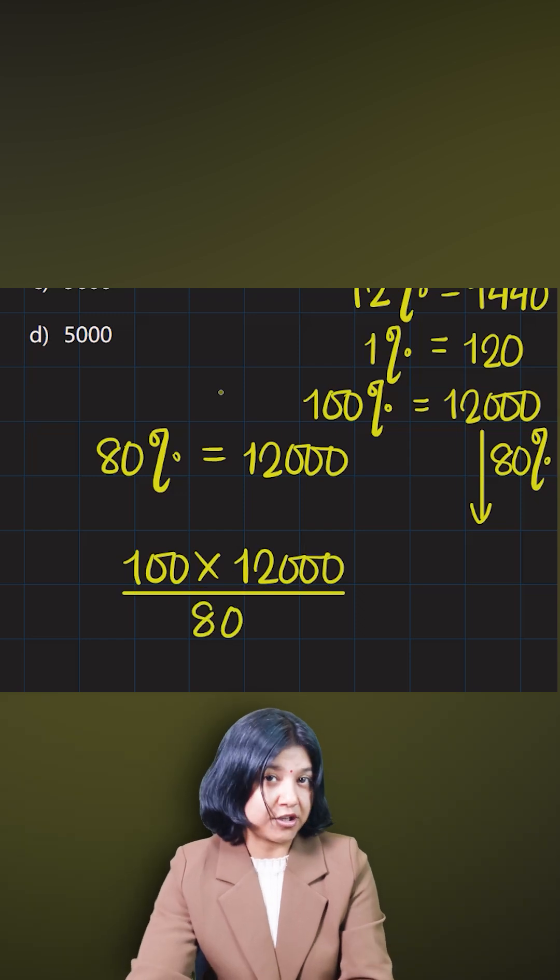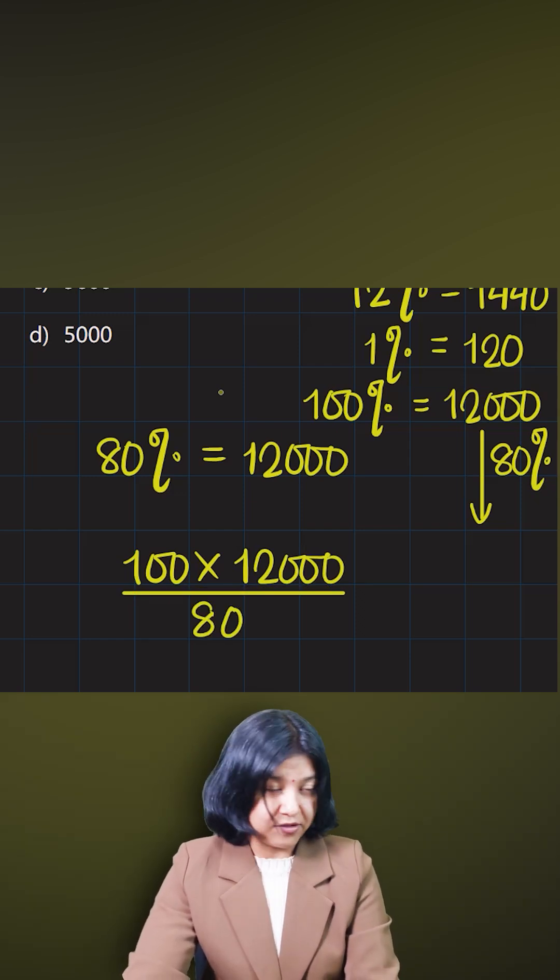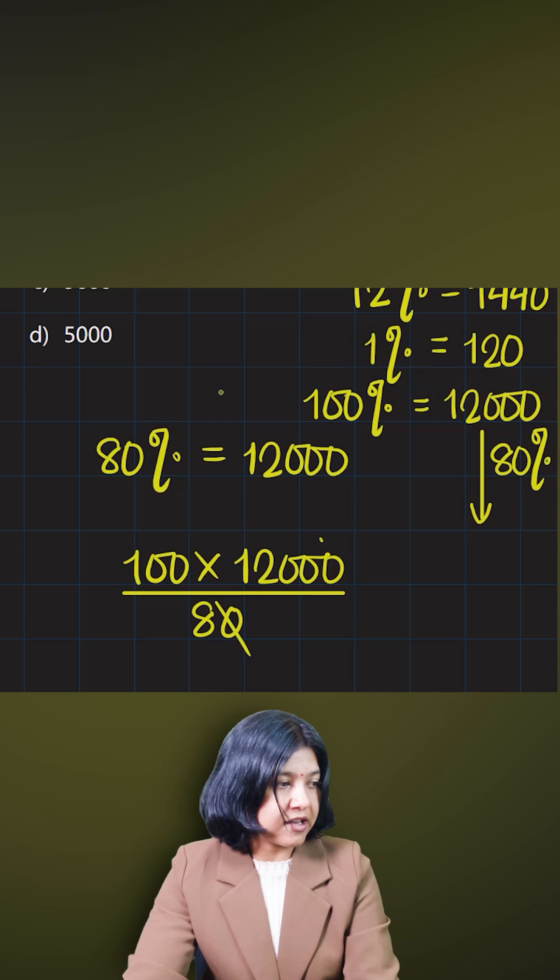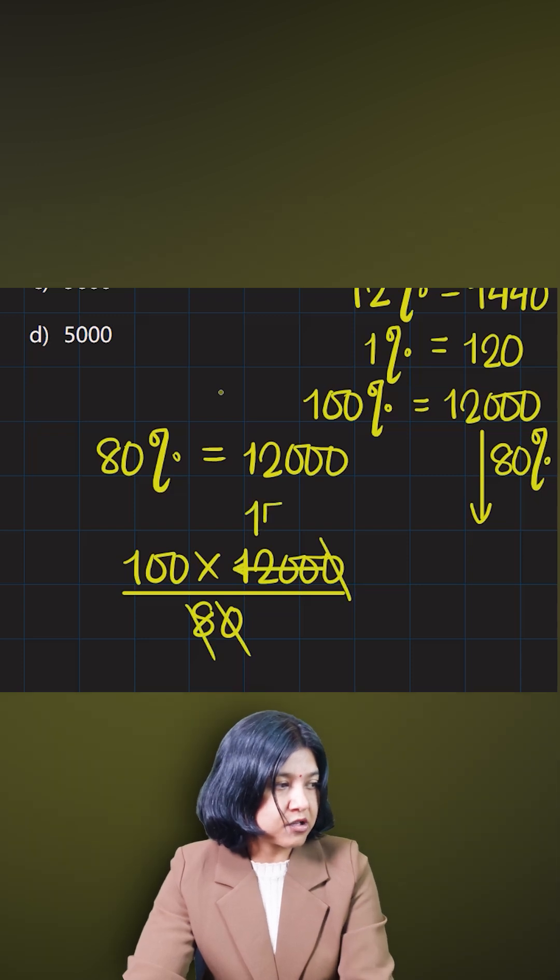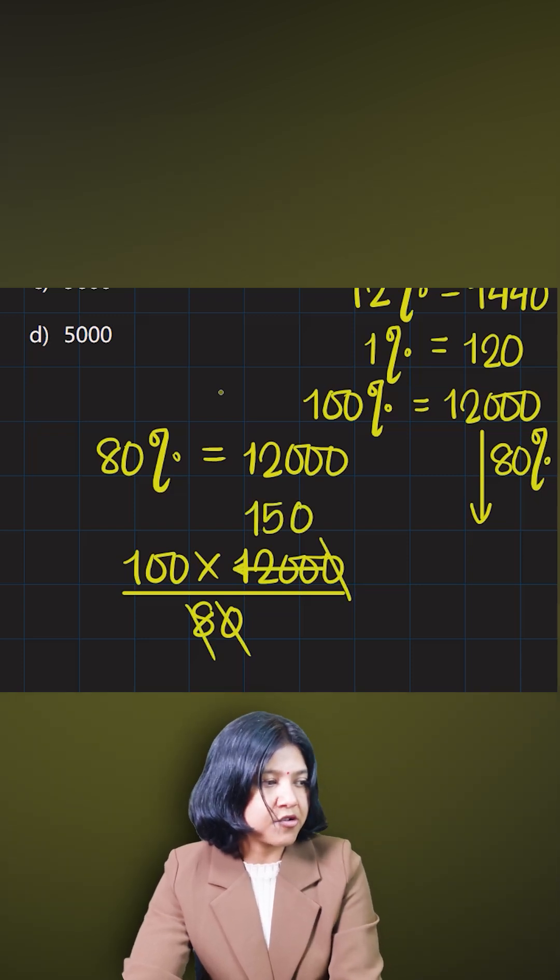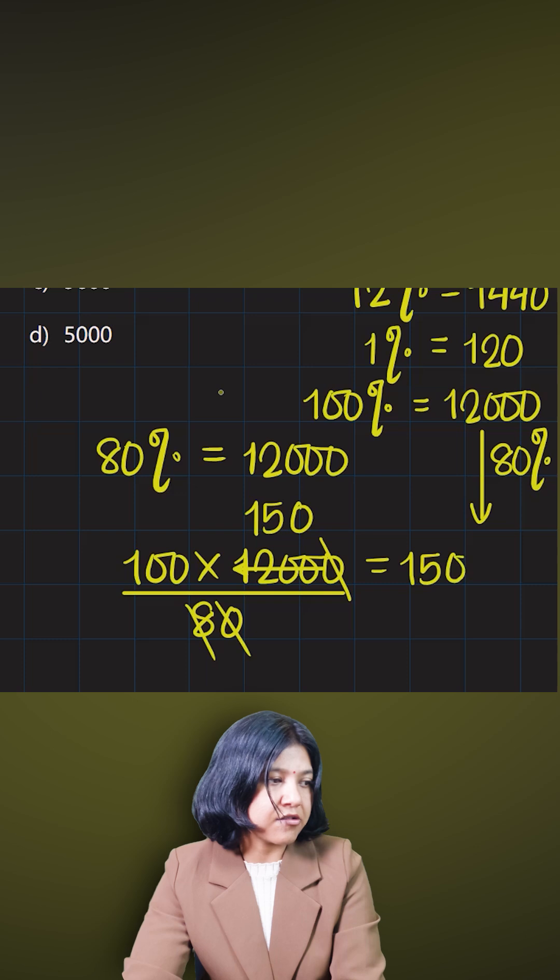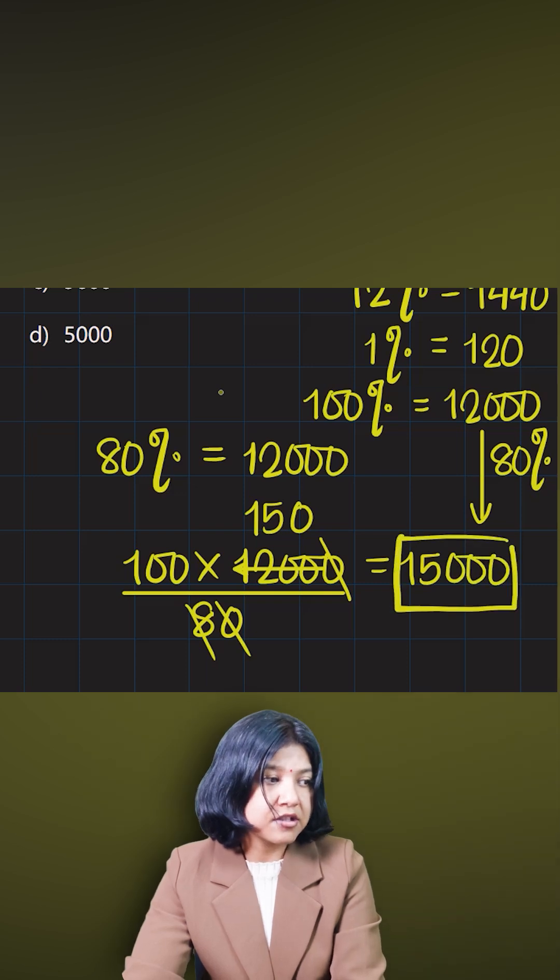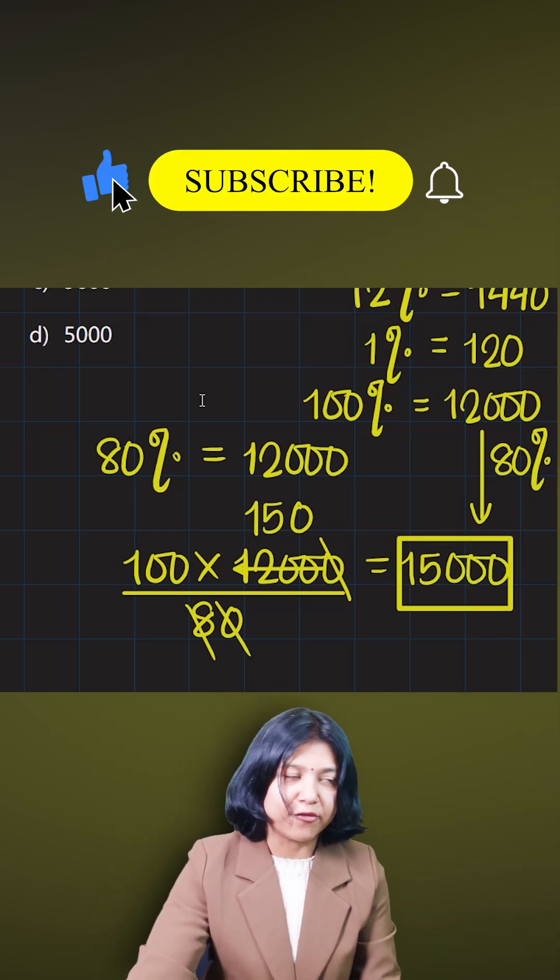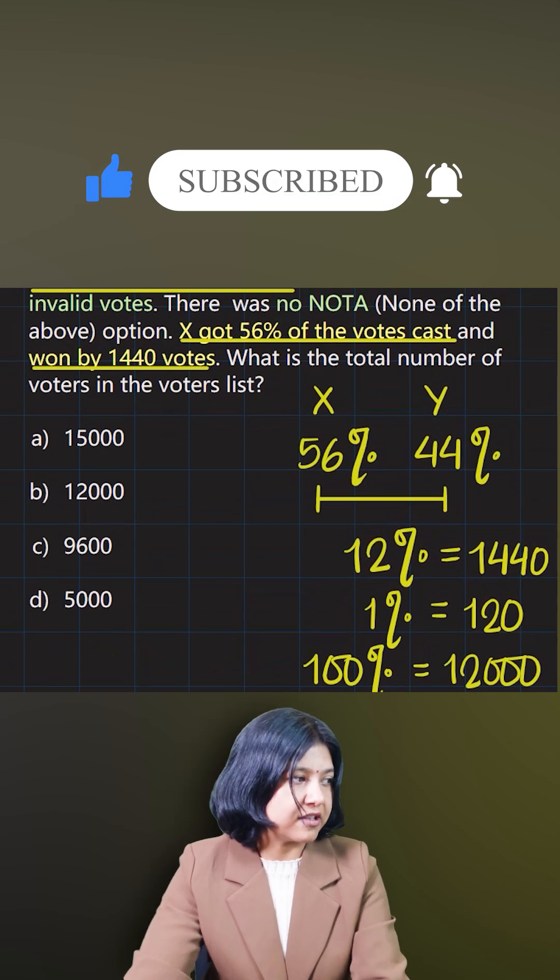Or you can cancel out one of the zeros - 8 into 120 is 15, so 150 times 100. The answer has to be 15,000. That's it! That is how you find the total number of people in the voters list - it has to be 15,000.